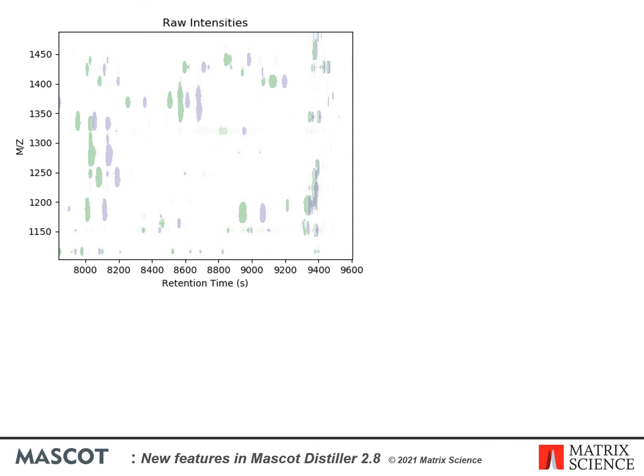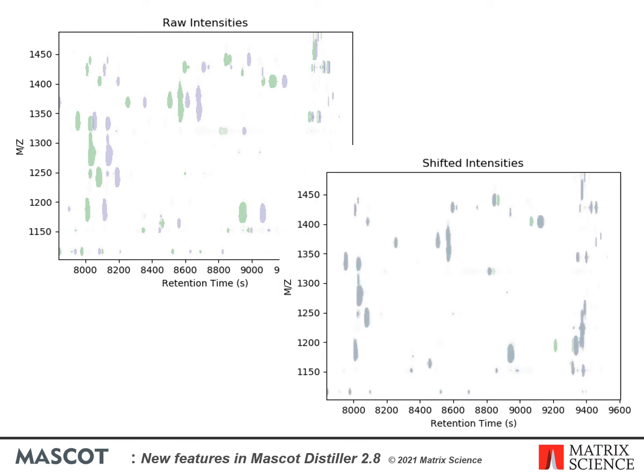There is a separate presentation looking at this in more detail, but to show the effect of the alignment: here we have MS1 features from two files in a label-free project plotted with retention time on the x-axis and m/z on the y-axis. Before alignment we can see a clear shift in feature retention times between the two files. After alignment the common features between the two files are now clearly overlapping. Note that this plot was created outside of Distiller for illustration and is not currently available as a report.